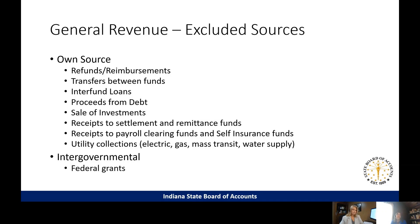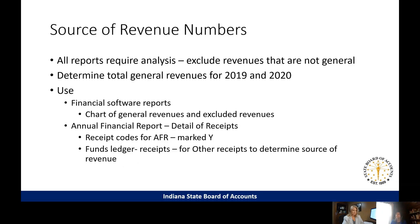Similarly, receipts to payroll clearing funds and self-insurance funds are also excluded. Utility collections — electric, gas, mass transit — are excluded from general revenues per the interim rule. Any money from the federal government is excluded, including the CARES money you received in 2020. No matter what source you use for your receipts or revenue numbers, it's going to require analysis to determine what's general revenue and what's not, so you can exclude non-general revenues and total up your general revenues for 2019 and 2020.